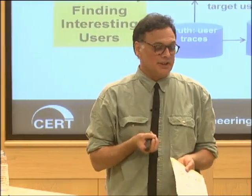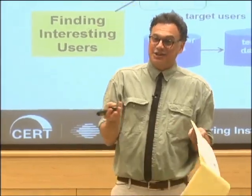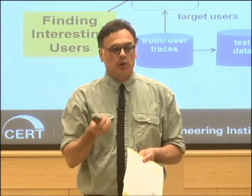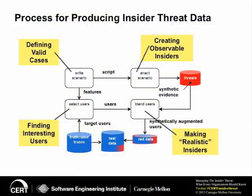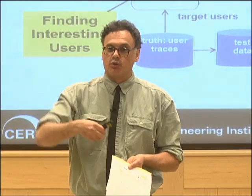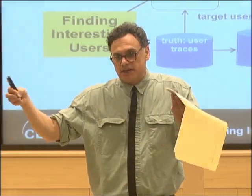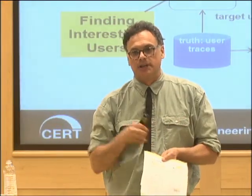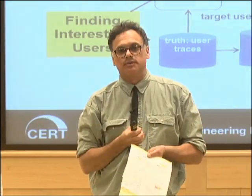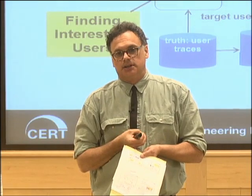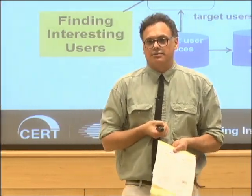We take users out of the corpus and pick the ones most interesting from our point of view — mostly users who fit the characteristics of the insiders we're describing. So if we have a sysadmin in our story creating a logic bomb, we'll look in the corpus for people who look like systems administrators. We look at their evidence records and sprinkle the synthetic behavior into their time series behavior and reinsert it into the database. Then we say: go forth and find our synthetic insiders. That's essentially what we do — a simple operational model.